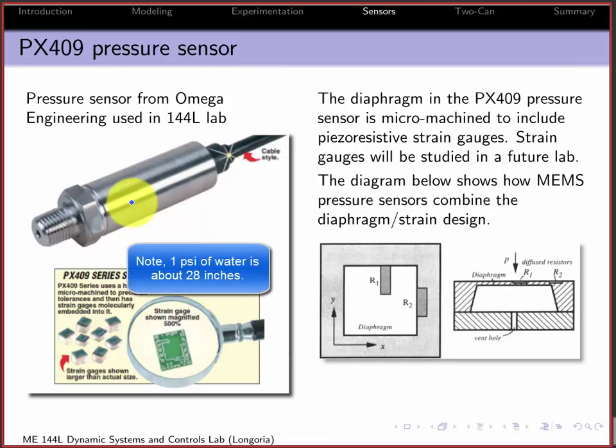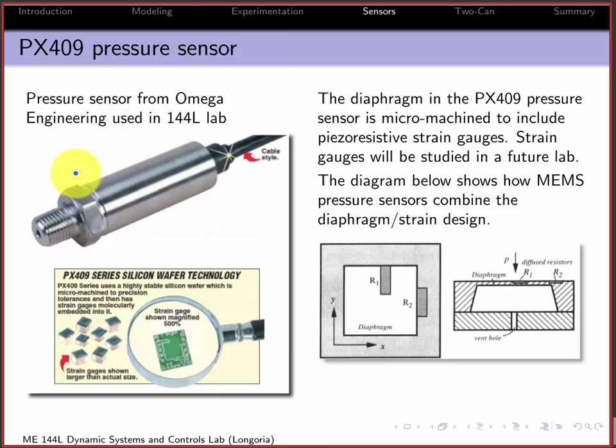It'll give you full-scale output, in this case five volts out. So it's fairly sensitive. So you can actually overrange these very simply if you're not careful. Although it has a pretty good overrange protection, but we're not putting really high pressures on here obviously.